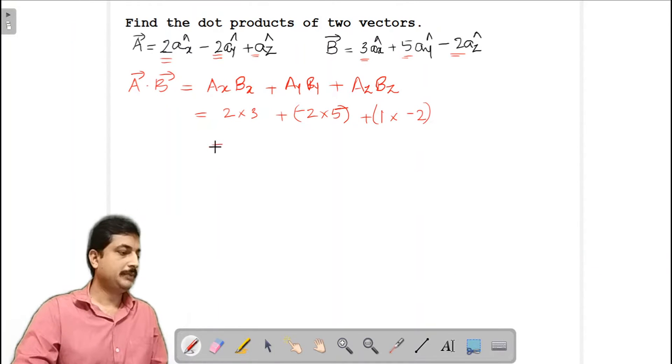So if you compute this you get it as 6 minus 10, 1 into 2 minus 2, 6 minus 10 minus 2. So this is minus 12. So you get it as 6 minus 12, it is nothing but minus 6.